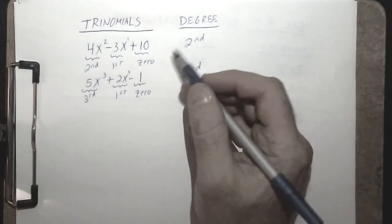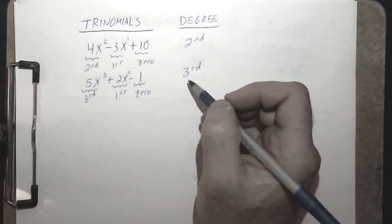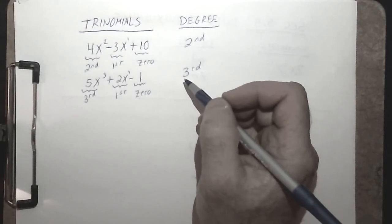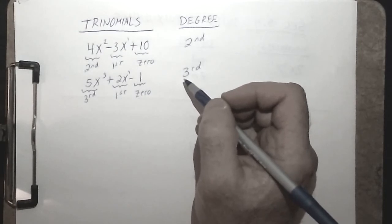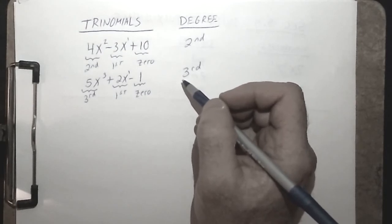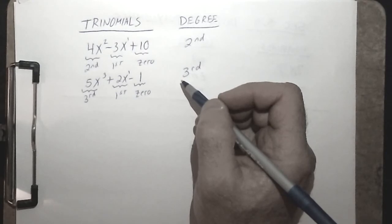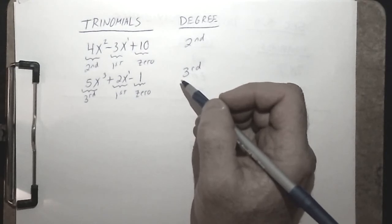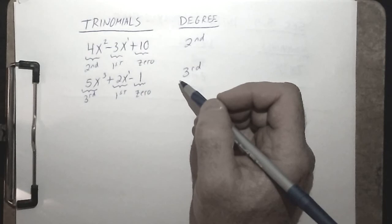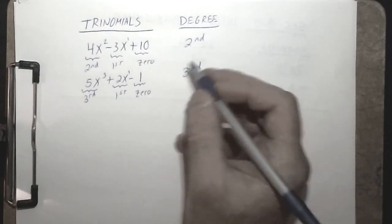All of these constructs shown so far belong to the family known as polynomials. So all monomials, binomials, and trinomials are polynomials, and really there is no limit as to how many terms a polynomial could have.